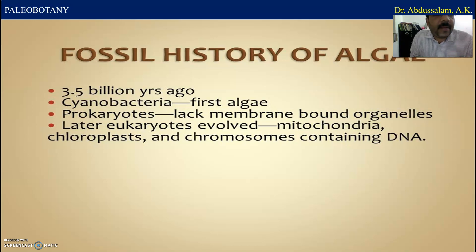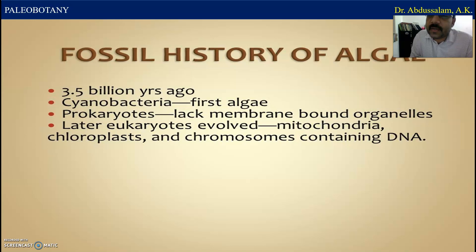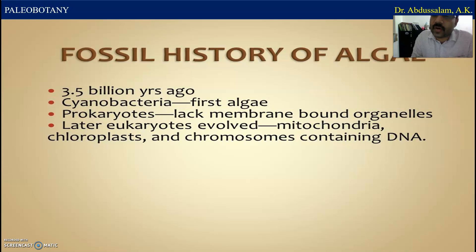We can see that 3.5 billion years ago fossil algae or algal organisms or algal species had evolved. For example, cyanobacteria — that is the first algae which formed and flourished during that particular time, and this particular species is still living in the water ecosystem. Prokaryotes lack membrane-bound organelles. Later, eukaryotes evolved with mitochondria, chloroplasts, and chromosomes containing DNA.